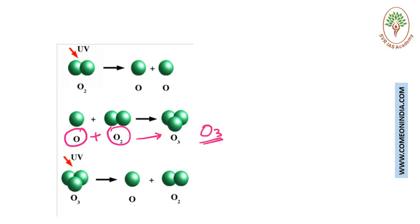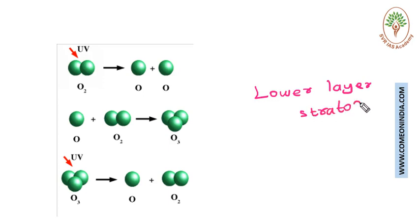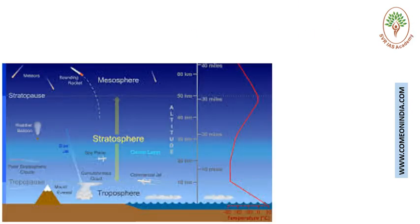Ozone is mainly formed in the lower layer of the stratosphere. As you may know, in the atmosphere there are four layers: troposphere, stratosphere, mesosphere, and ionosphere.